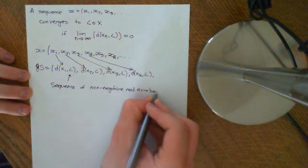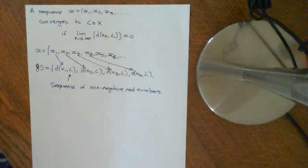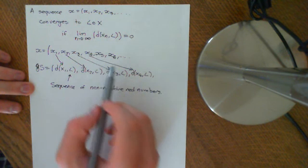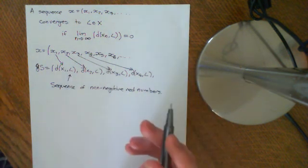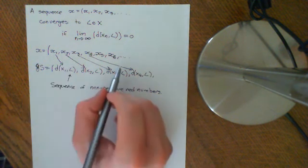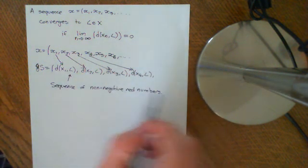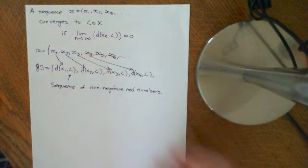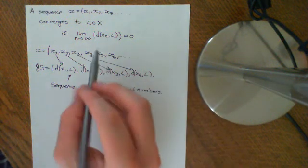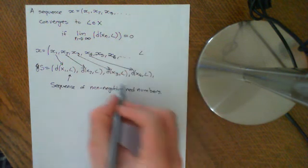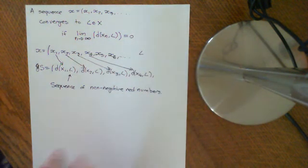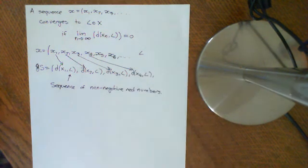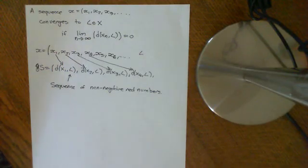We are assuming we know real analysis, so we know what it means for a sequence of real numbers to converge. We can say that the sequence (x1, x2, x3, x4, x5, x6, ...) in the abstract metric space is going to converge in the metric space if the sequence of distances converges to zero. We can reduce the question of convergence in the metric space to asking whether this sequence of real numbers converges to zero.